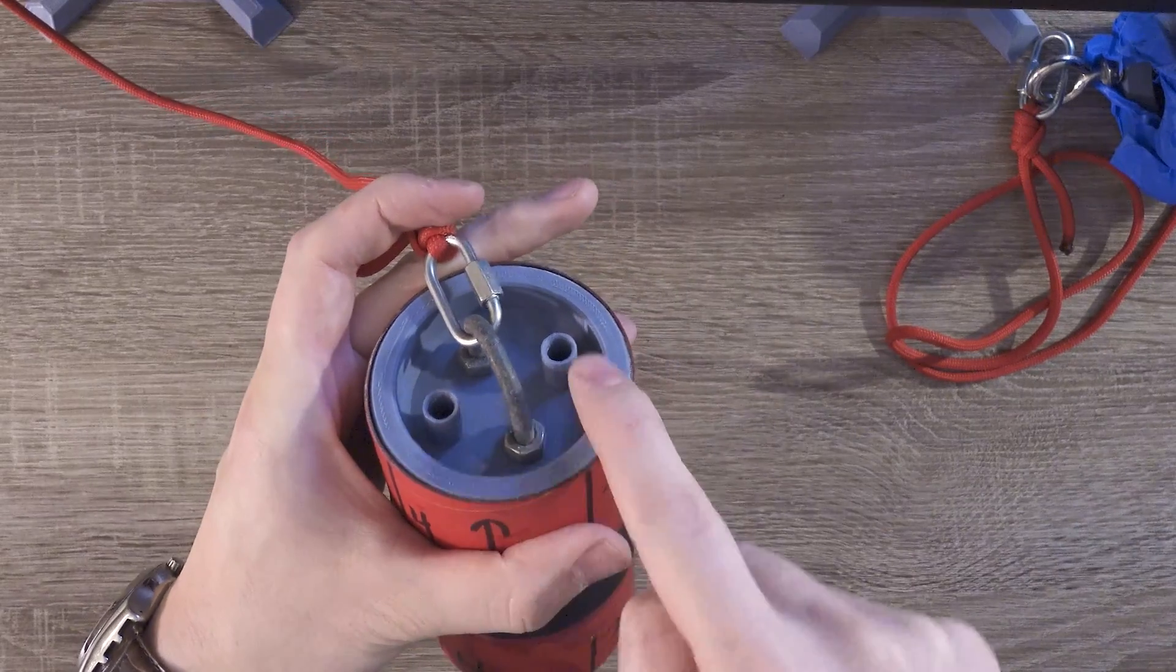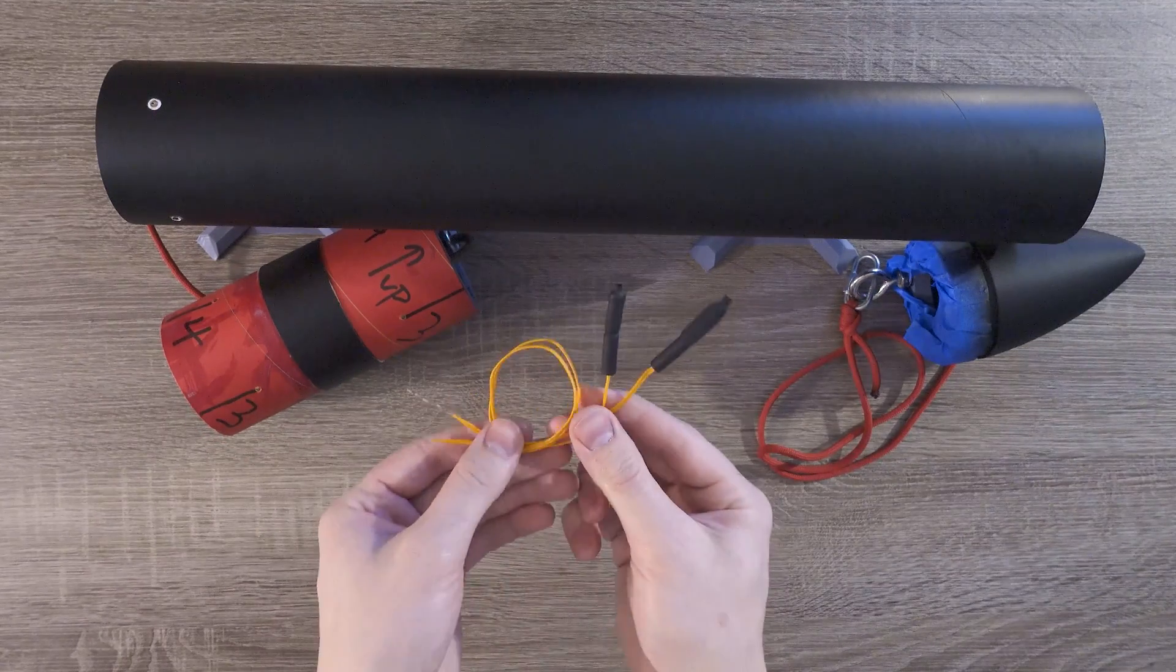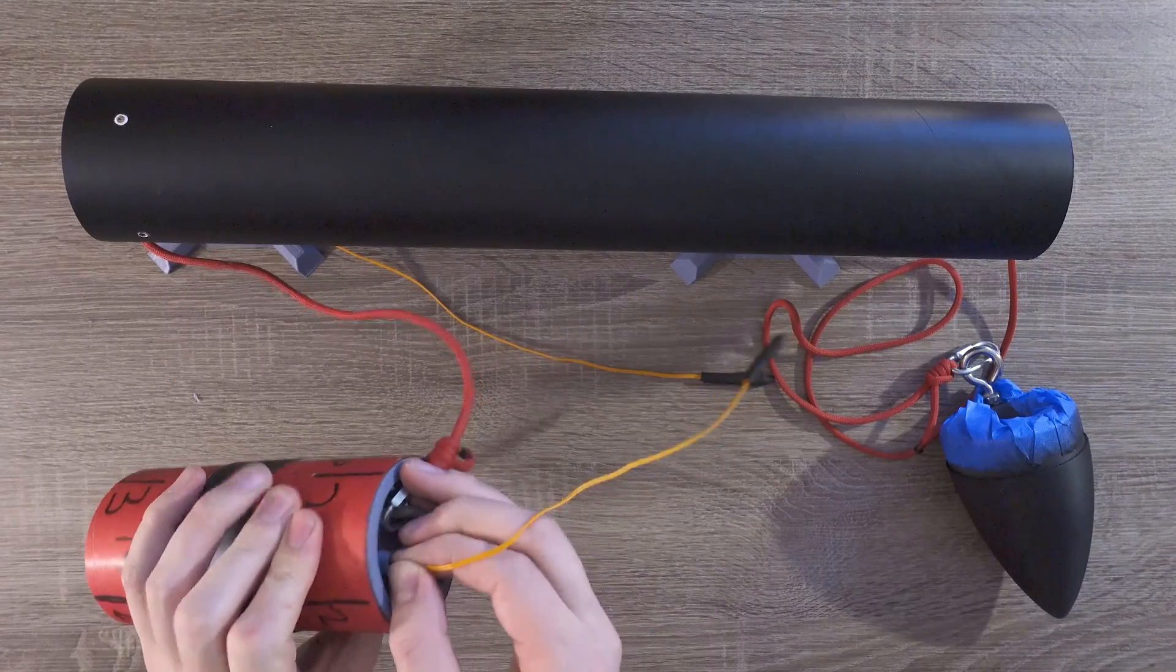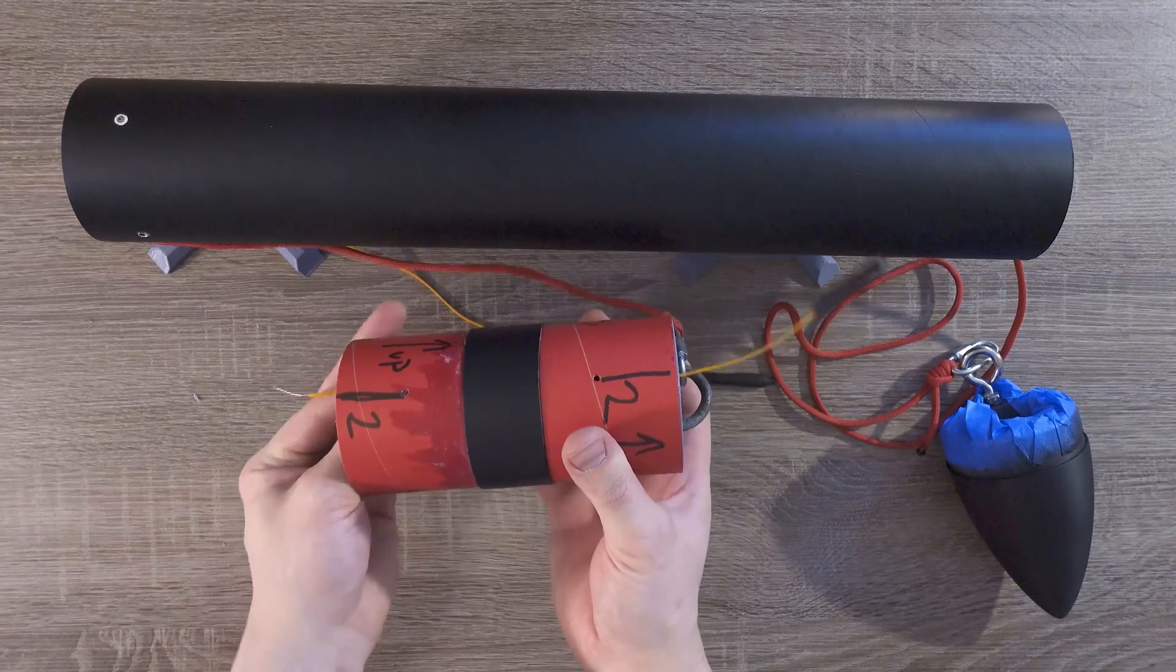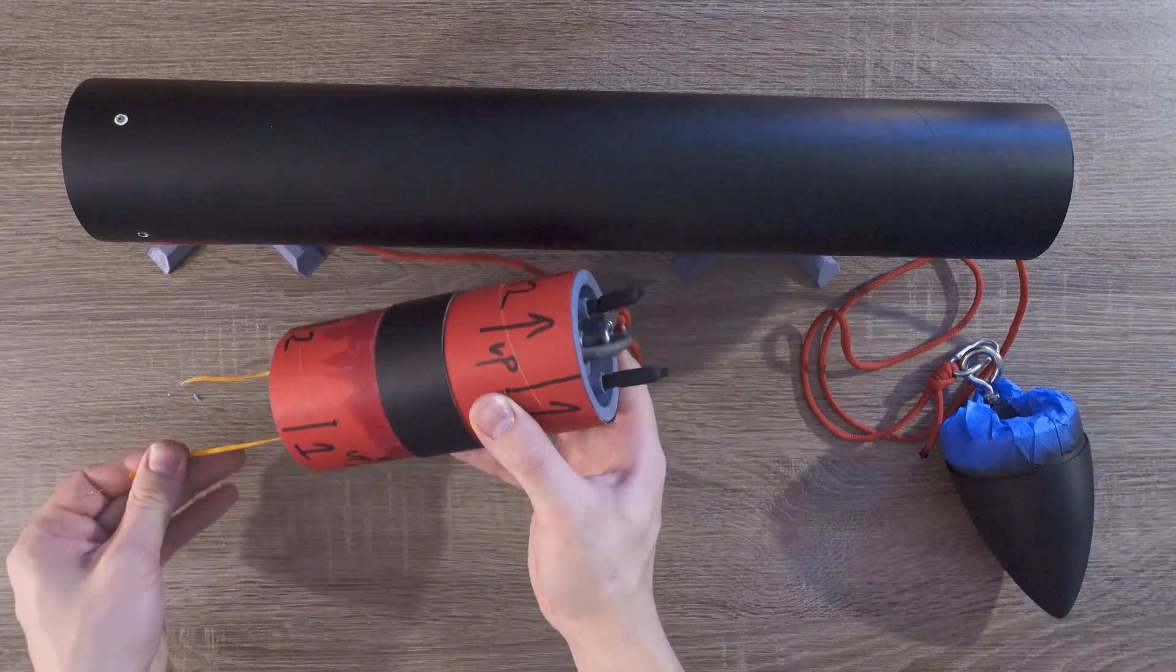These two sections on the body coupler airframe hold pyro ejection charges. If you're curious about how to make these, there's a link in the description down below. You only need one charge per flight, but having two makes things a little simpler between flights. We'll thread one charge through the first hole, and then the other charge through the second hole.